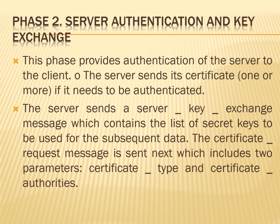The next phase in Handshake protocol action is Phase 2: server authentication and key exchange. Here the server begins this phase by sending its certificate, which needs to be authenticated. The message contains one or a chain of X.509 certificates. The certificate message is required for any agreed-on key exchange method except anonymous Diffie-Hellman. If fixed Diffie-Hellman is used, the certificate message functions as the server's key exchange message because it contains the server's public Diffie-Hellman parameters. The server key exchange message is sent if required, and it is not required in two instances: first, the server has sent a certificate with fixed Diffie-Hellman parameters; second, RSA key exchange is used.